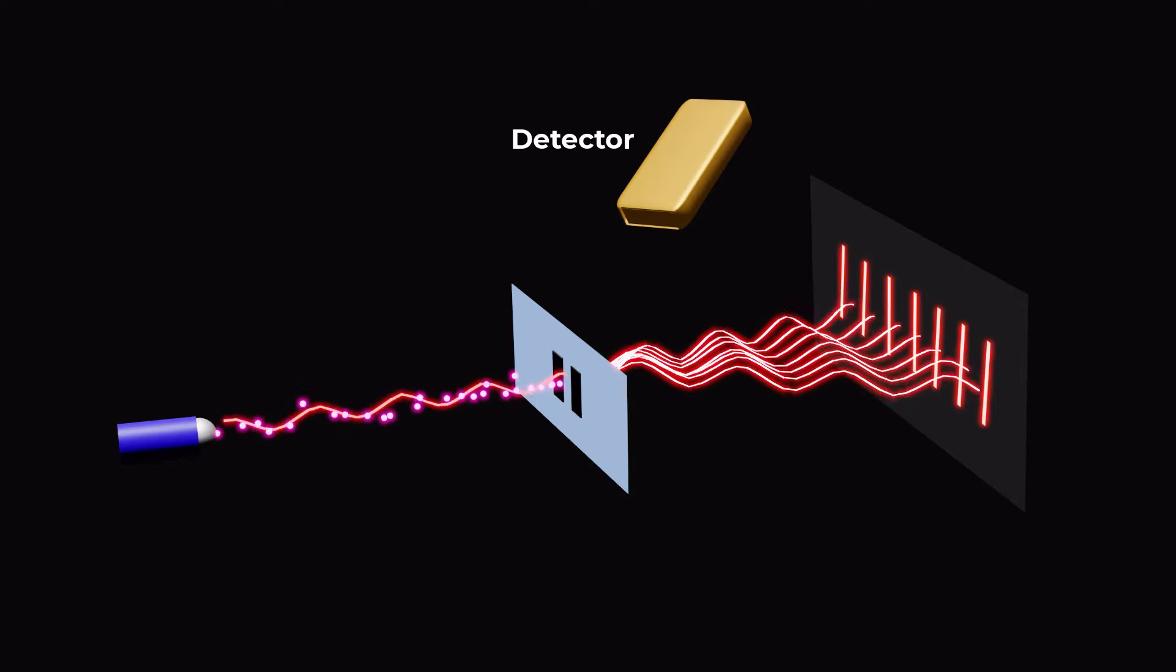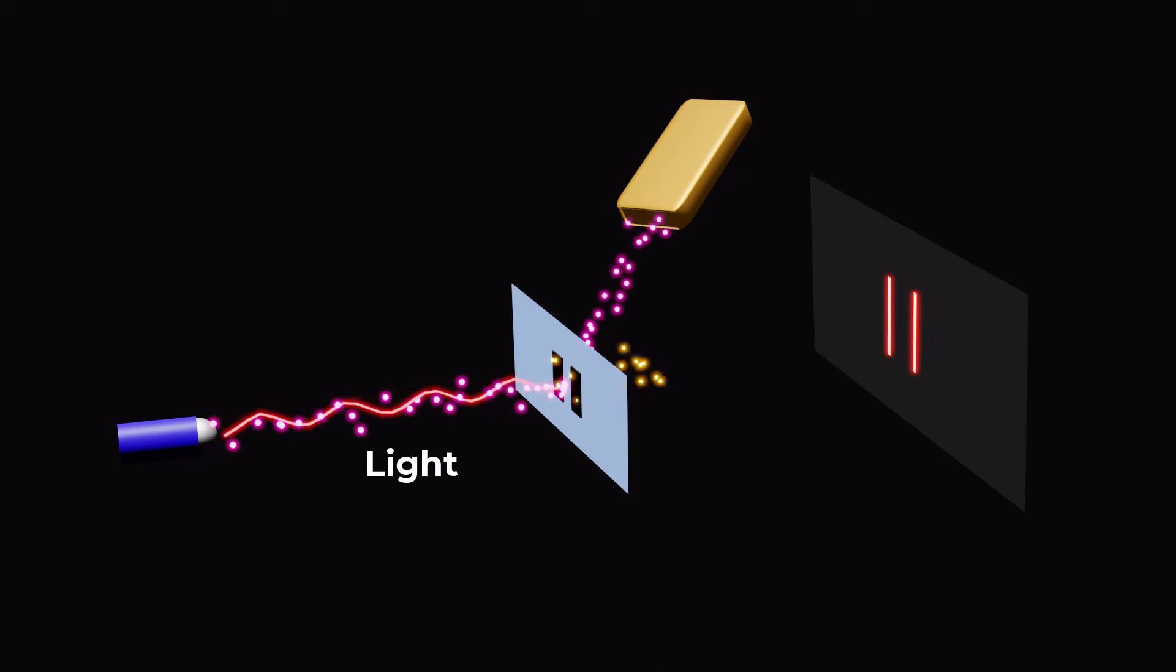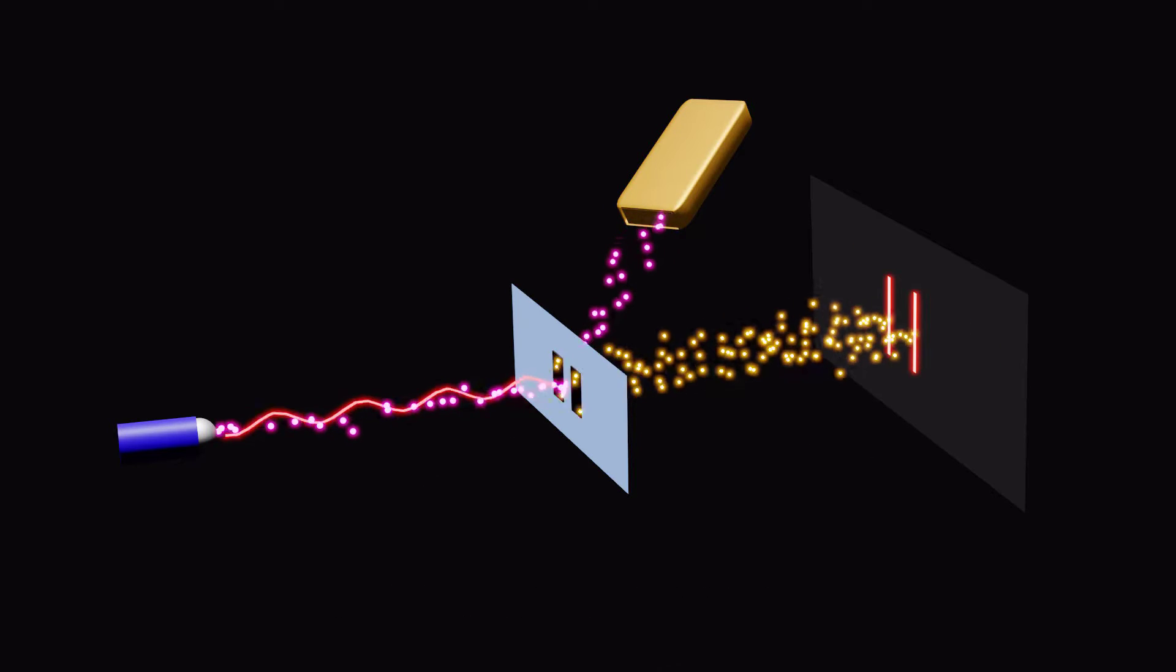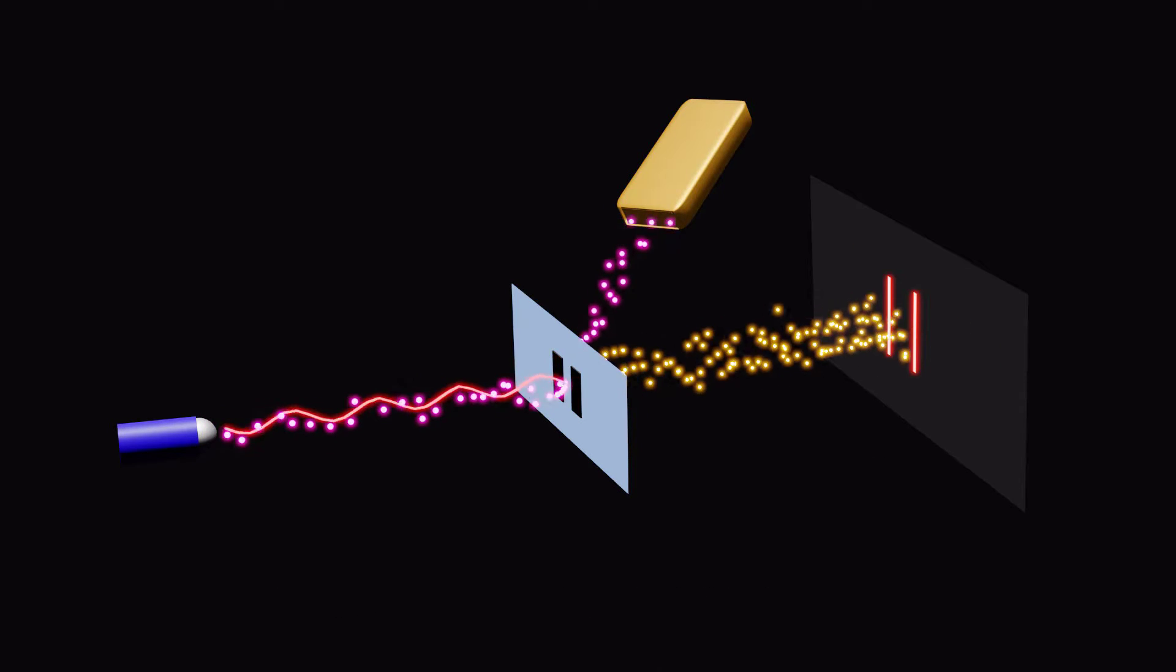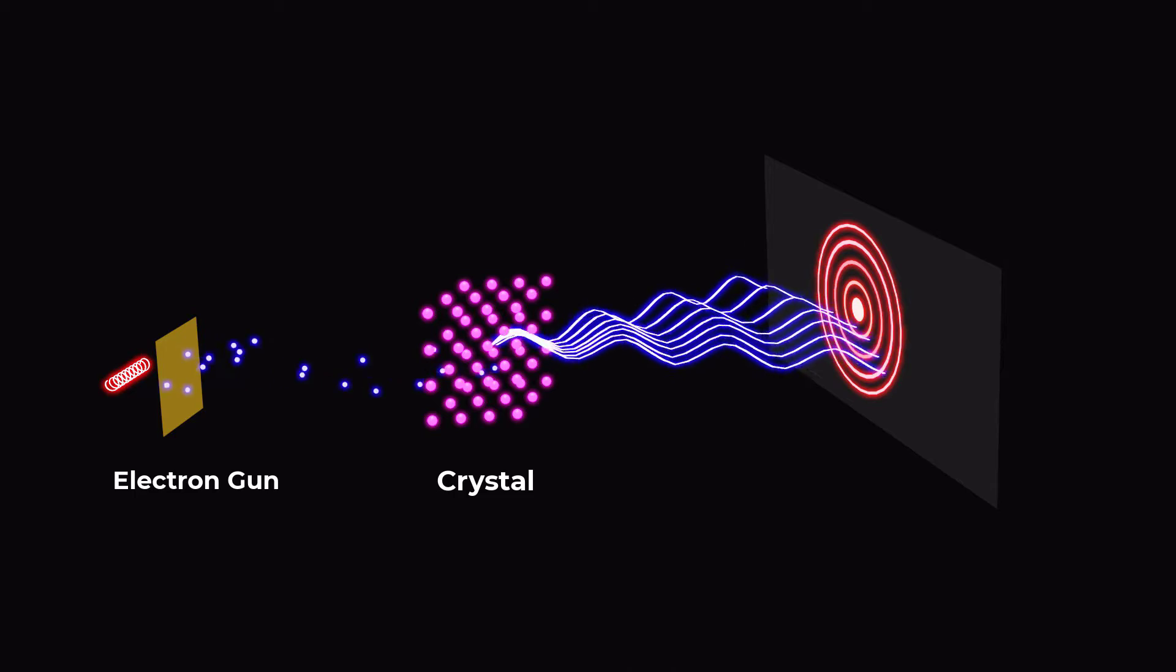De Broglie's hypothesis was based on the observation that light exhibits both wave-like and particle-like properties. He proposed that if light could behave as both a wave and a particle, then material particles should also exhibit this duality.